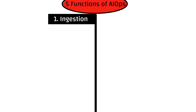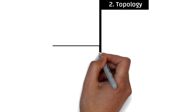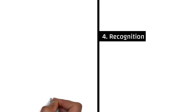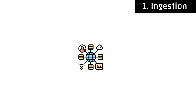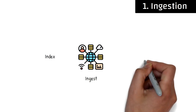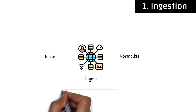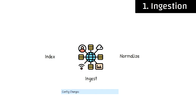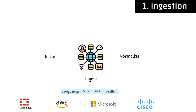Gartner defines five major functions of an AIOps system: ingestion, topology, correlation, recognition, and remediation. The big data component will ingest, index, and normalize events from devices throughout the network, spanning across multiple devices and vendors to grab data and telemetry. These events can be as simple as config changes, syslog messages, SNMP alerts, netflow, and other types of telemetry data. As you look for an AIOps solution, this step is critical — you want to make sure your devices can be integrated and supported by the system. The more data points supported for your device, the better.